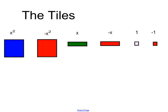The large red square is going to be the negative x squared tile. The rectangular green rectangle is your x tile.